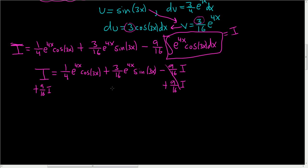These cancel. You want to think of this as 16 over 16 I. So when you add these, 16 plus 9 is 25, so we get 25 over 16 I equals all the stuff over here. I'll go ahead and write it down again. So 1 fourth e to the 4x, you've got to be really careful here, cosine of 3x.